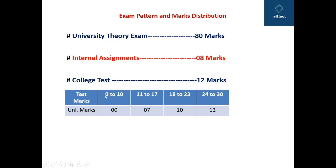If you score 0 to 10 in a college test of 30 marks you will get no marks as per the university equivalence. So therefore out of 12 you will get only 0 for 0 to 10 out of 30. If you score between 11 to 17 inclusive, you can get 7 marks out of 12.